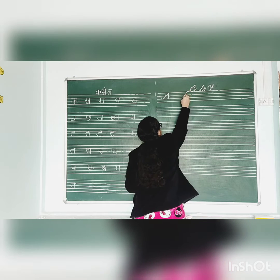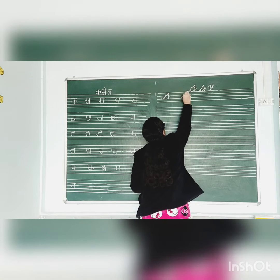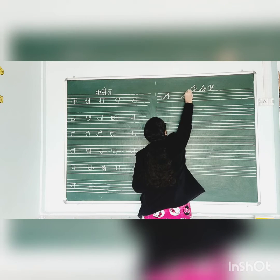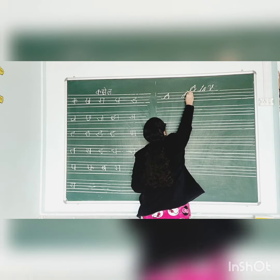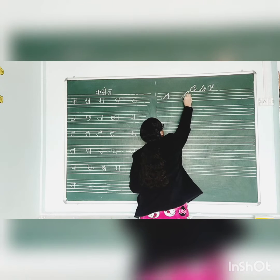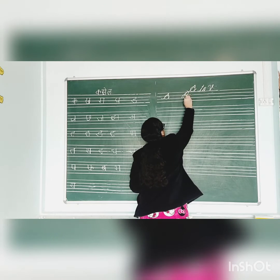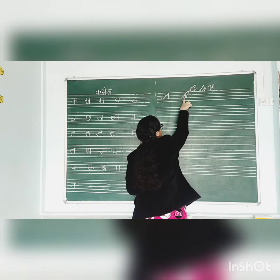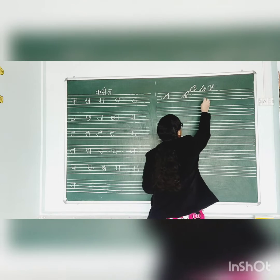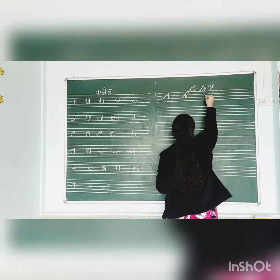Cursive B. Next. Slanting line. Mingo Curve. Round. Another round. Cursive B.